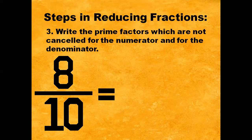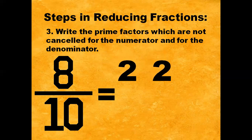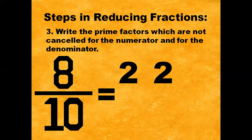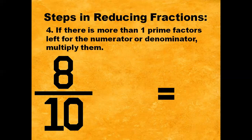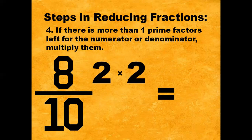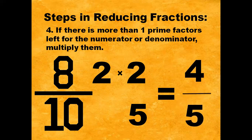Step number 3: Write the prime factors which are not cancelled for the numerator and for the denominator. For 8, we have 2 and 2, or 2 times 2. And for 10, we have 5. Step number 4: If there is more than one prime factor left for the numerator or denominator, multiply them. In this case, we have 2 prime factors left for the numerator, so 2 times 2. For the denominator, we only have 1 prime factor and that is 5. So the answer is 4/5 — 2 times 2 gives us 4, and then copy the denominator 5. In short, the lowest term for 8/10 is 4/5.